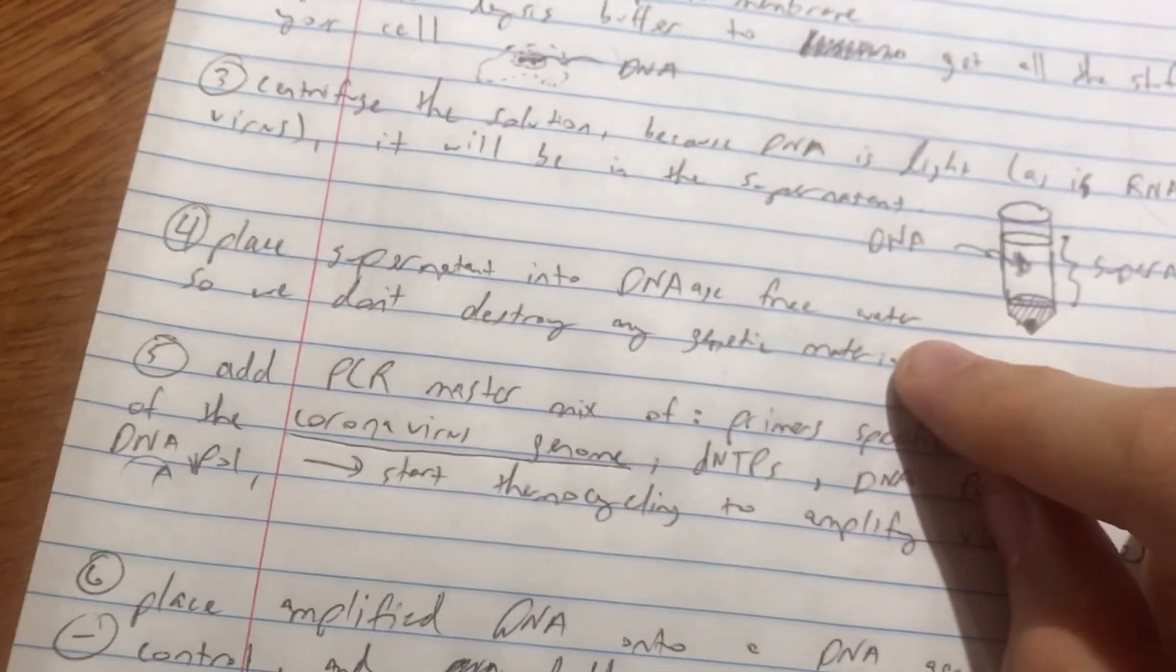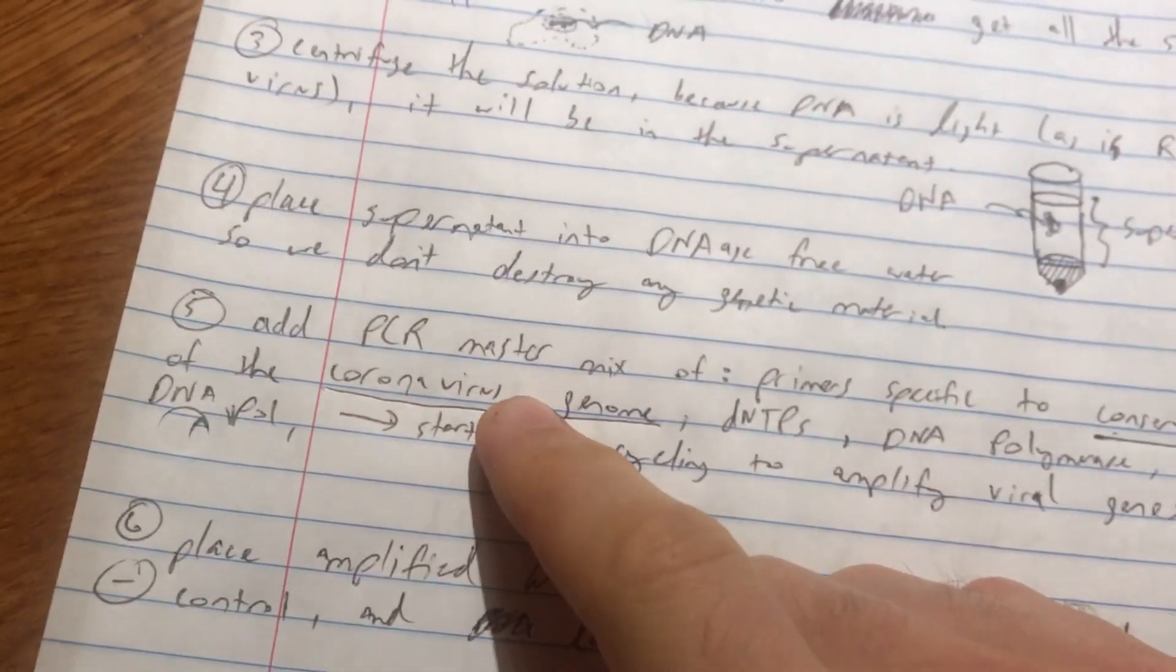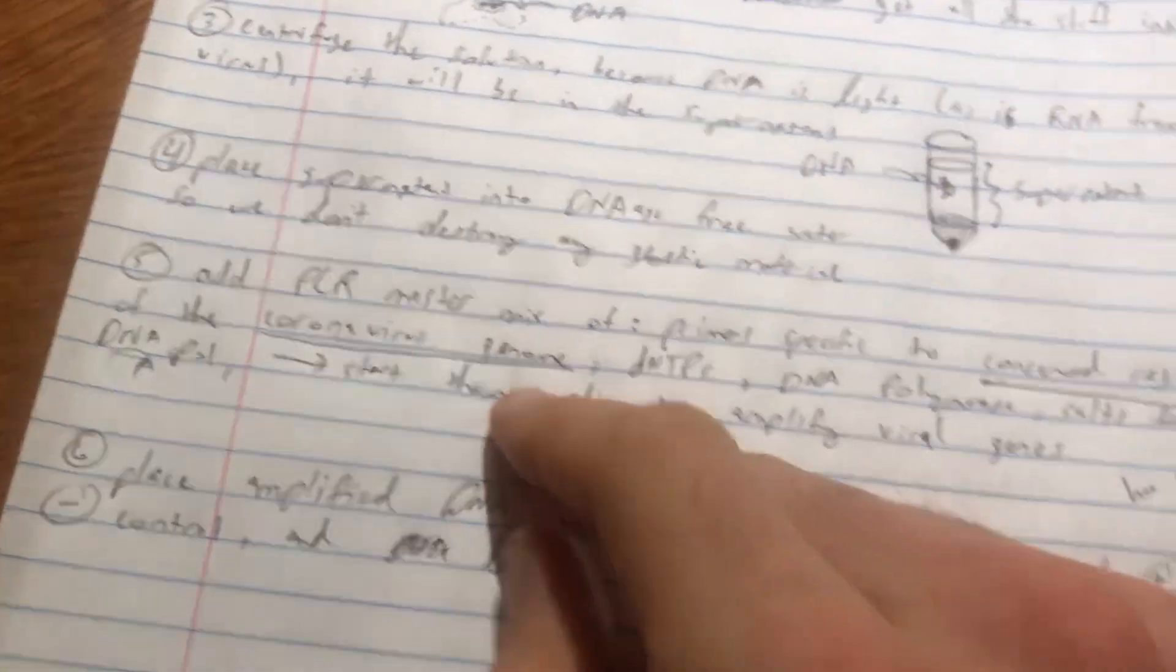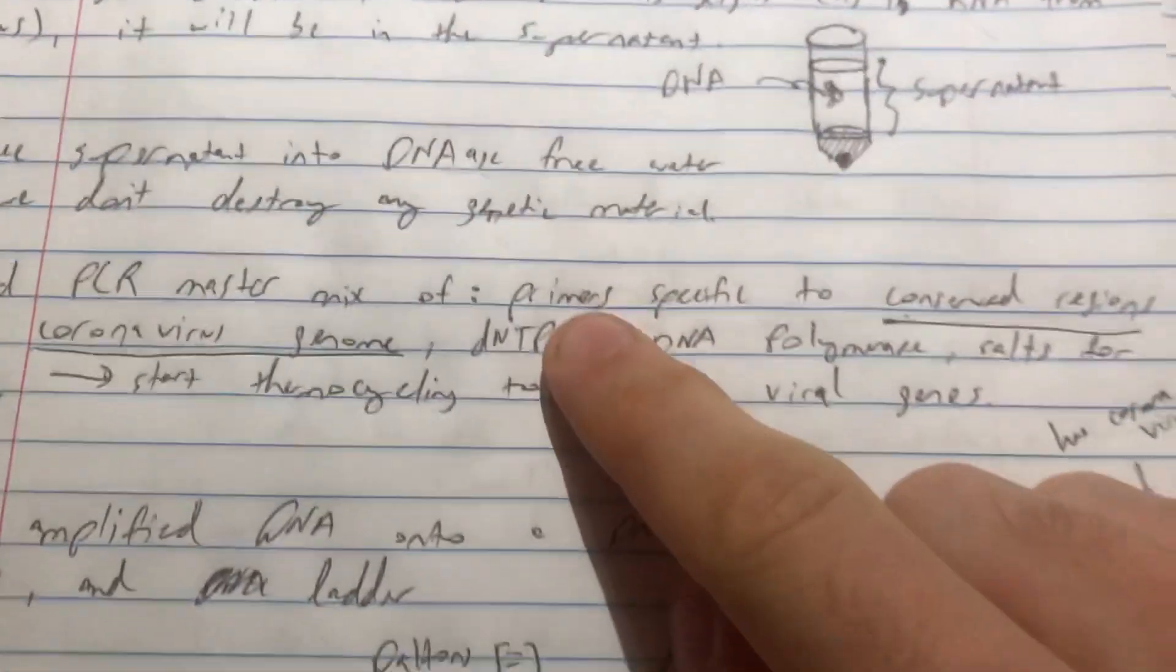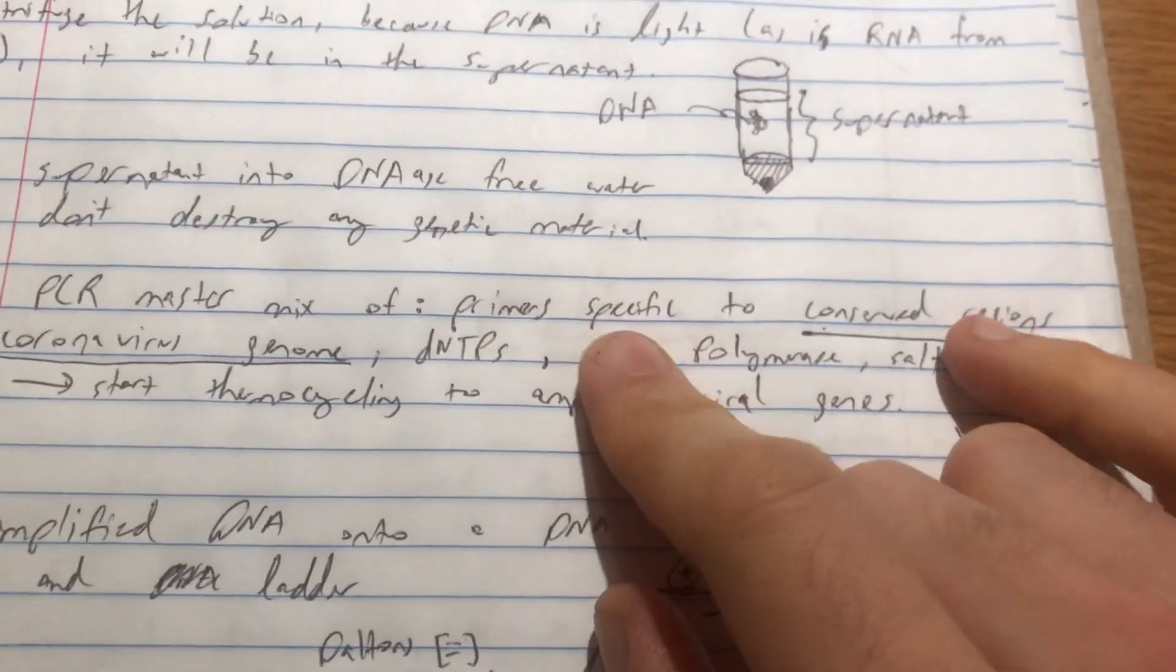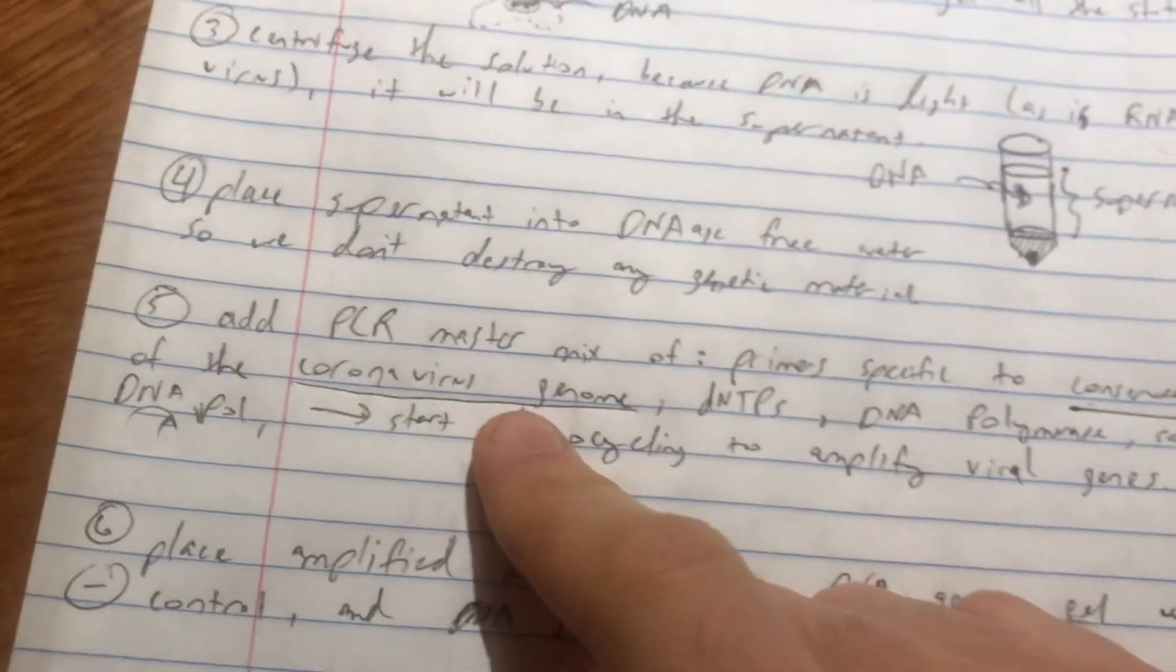So once we've got this solution transferred into good clean water, the next thing we're going to do is add a PCR master mix. And so this PCR master mix, if you remember from biology, is a mixture of primers that will be specific to conserved regions of the coronavirus genome.